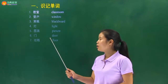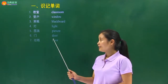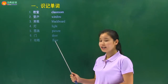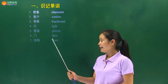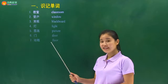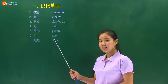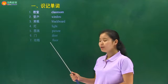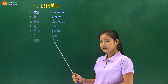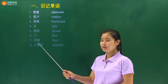那我们看一下这两个单词：door，floor，它们的写法后面是两个O再一个R，是不是？我们放在一起记：门，door；地板，floor.